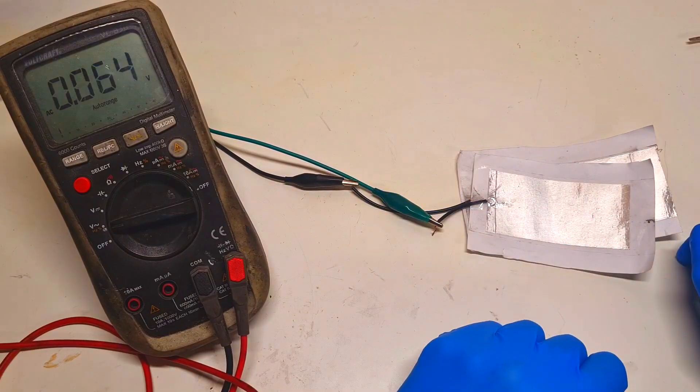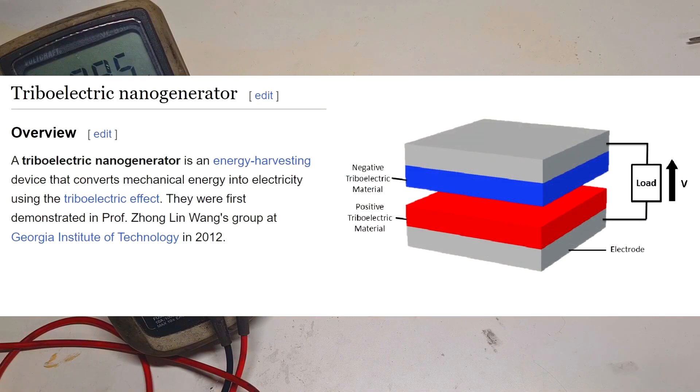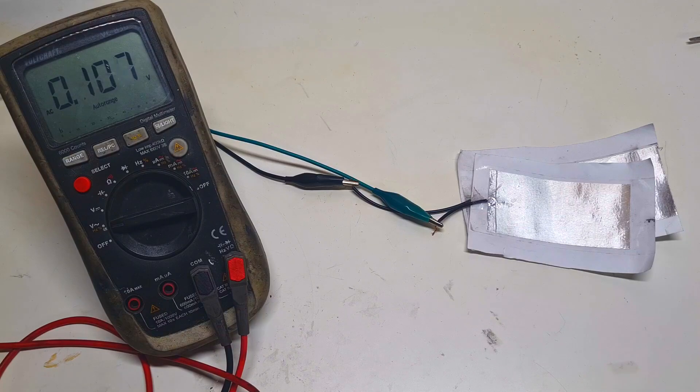So what is a triboelectric generator? The triboelectric generator is an energy harvester which transforms almost all forms of mechanical stress into electricity. This means that the triboelectric generator will harvest energy from all sorts of vibrations, rubbing, and so on.